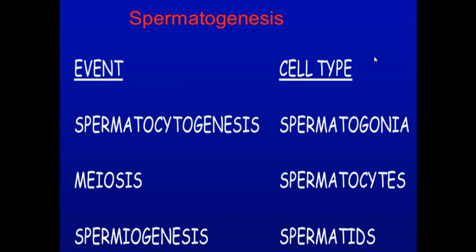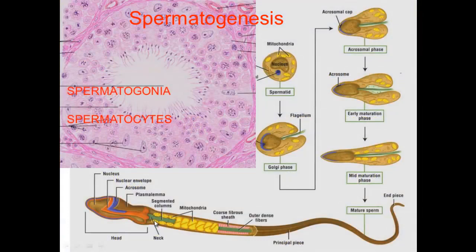Now there's three types of germ cells: you've got the spermatogonia, spermatocytes, and spermatids. And these divide spermatogenesis into three major events: the mitotic activity or spermatocytogenesis, meiosis, and spermiogenesis.